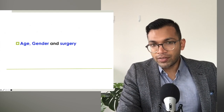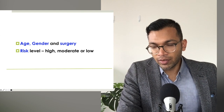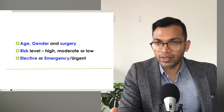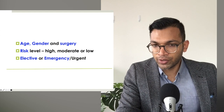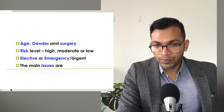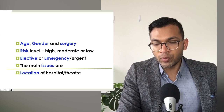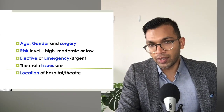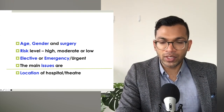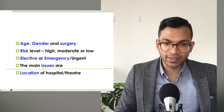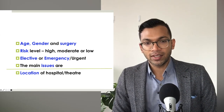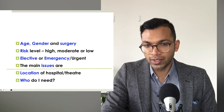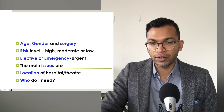So what are the magic words? It's very safe to say: age, gender, the surgery, the risk level as you perceive it - high, moderate, or low - and whether it's elective or emergency, because that dictates how much time you have to optimise. Then what are the critical or main issues? In our training world we're often in tertiary hospitals, but in a peripheral or smaller centre, location actually matters. Also start thinking: who do I need?